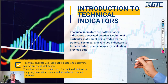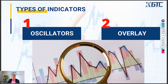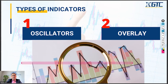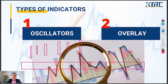Mainly we have two types of indicators available to traders. The first one is known as oscillators and the second type is overlay. Oscillators appear in a window other than the price. So when we're plotting a chart with candles, you'll find the oscillator window below the main candles — they are not overlaid on the price candles themselves.